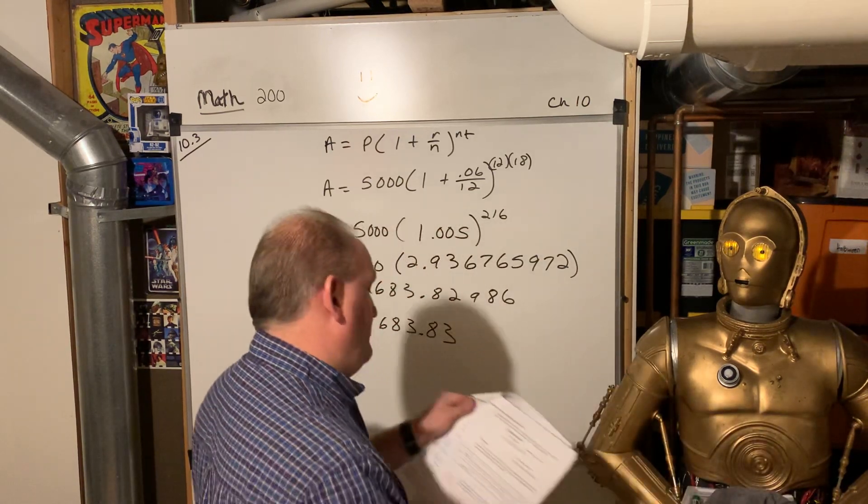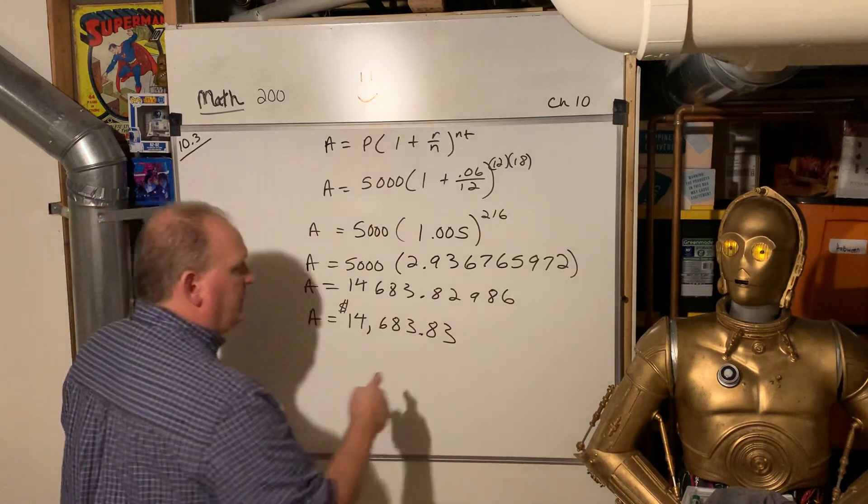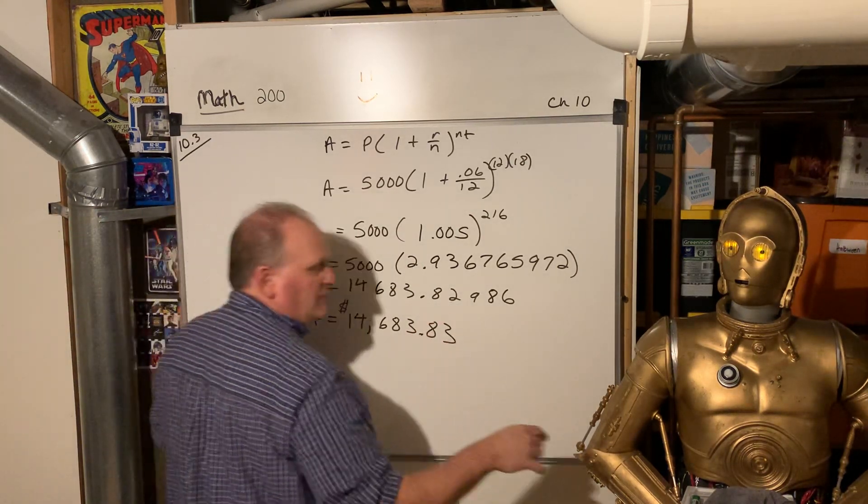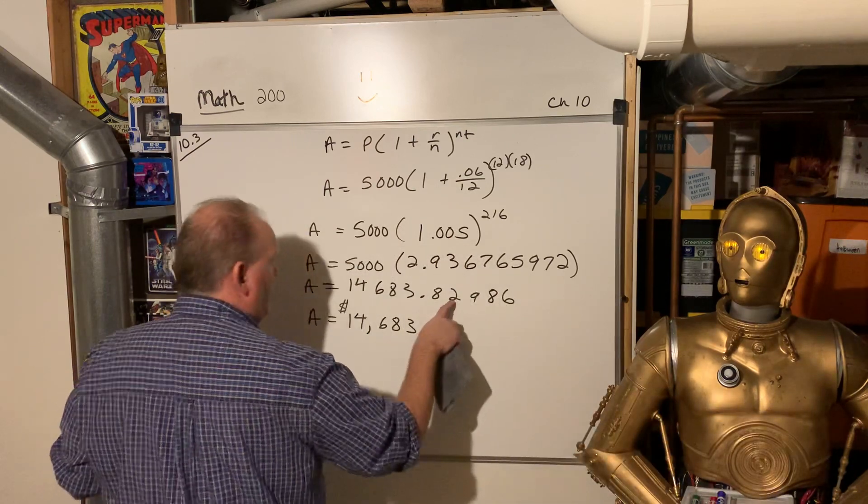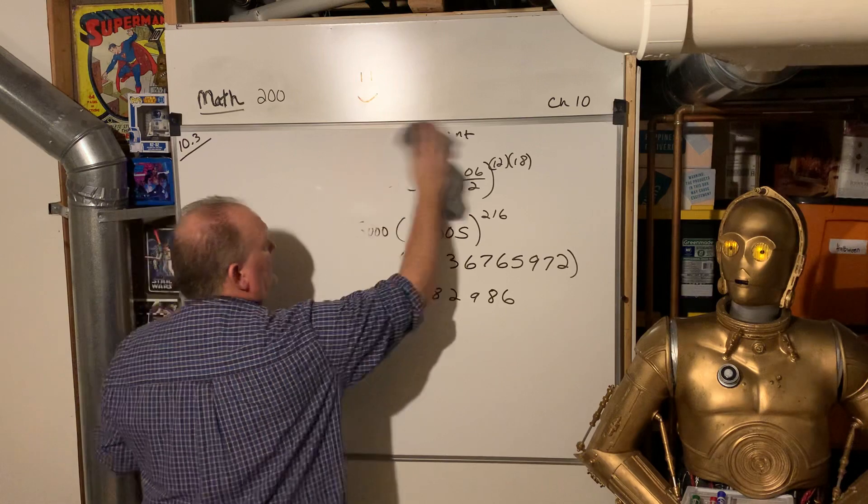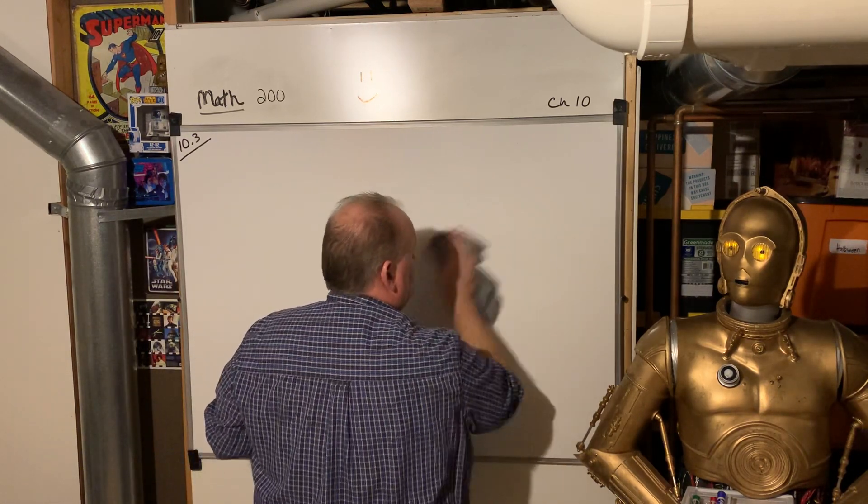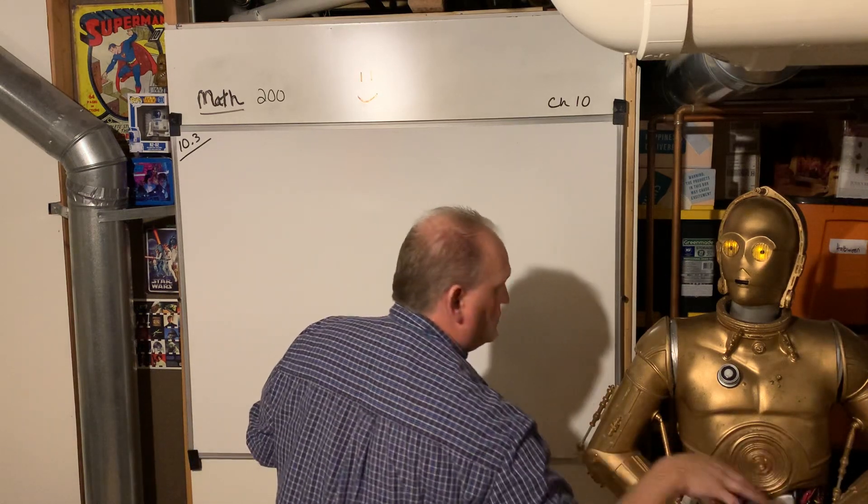Okay. Now on to 10.3. Oh, if you left at 82, that would also be okay. Banks don't actually round up to the next penny because that ends up being a lot of pennies. So they truncate. They don't round.